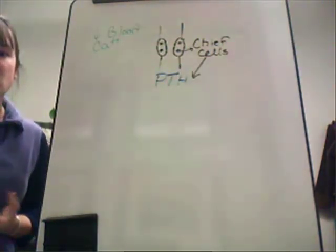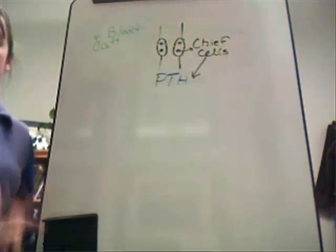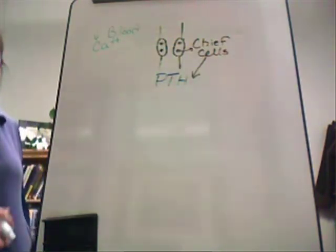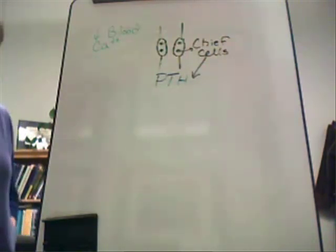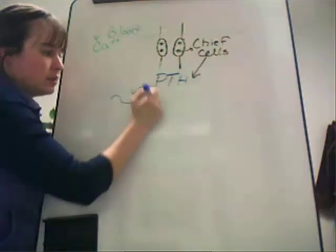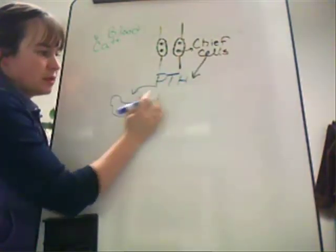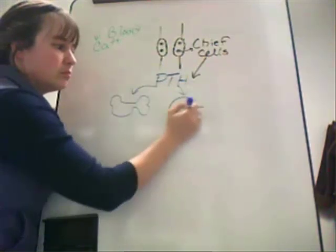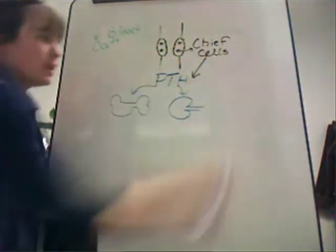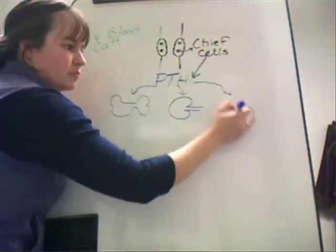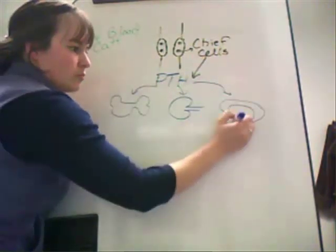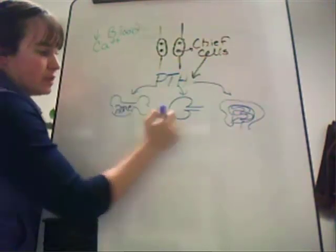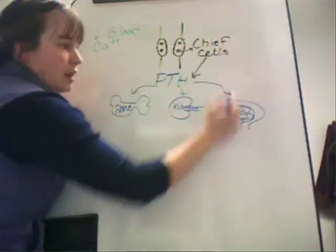Now, the parathyroid hormone has an effect on several tissues in the body. Remember, the purpose of parathyroid hormone is to increase circulating amounts of blood calcium. To do that, I have a couple of tissues that I can target to help increase the blood calcium levels. One is going to be bone tissue. Two is going to be the kidney. And three is going to be the intestine. So, I've got bone, kidney, and intestine.